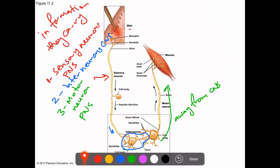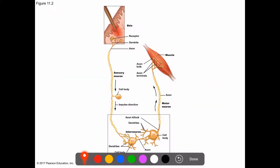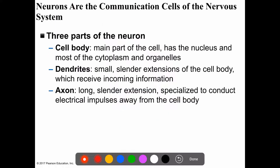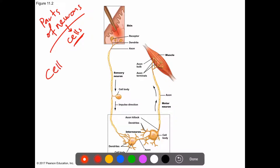Now let's examine the parts of neurons. Remember, neurons are cells, so many of the organelles we saw earlier can be found in them. I will focus on the parts most related to the function of neurons. First, we have the cell body, which is the main part of the neuron.